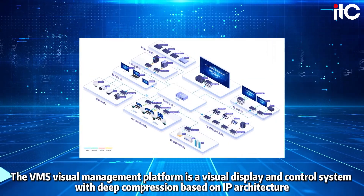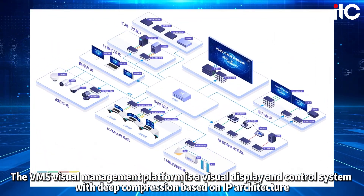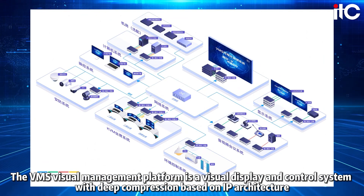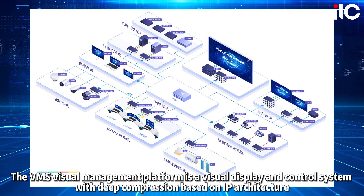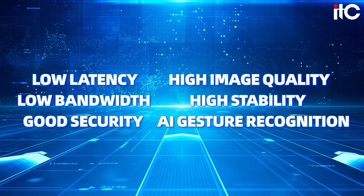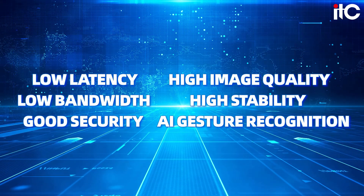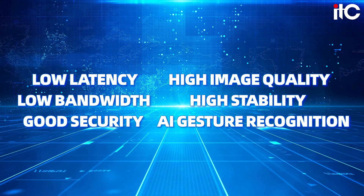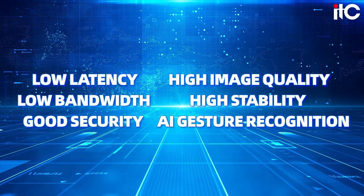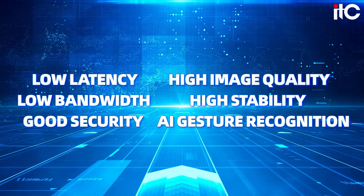The VMS visual management platform is a visual display and control system with deep compression based on IP architecture. Featuring low latency, high image quality, low bandwidth, high stability, good security, and AI gesture recognition.